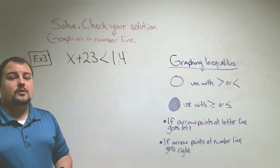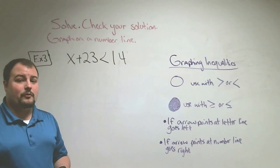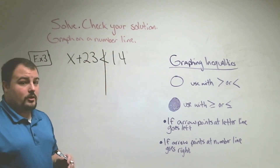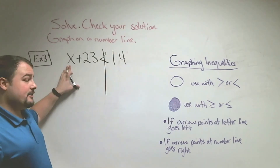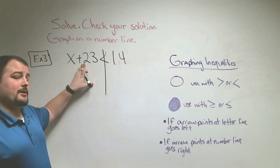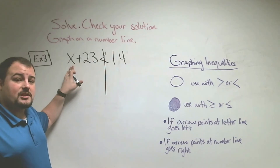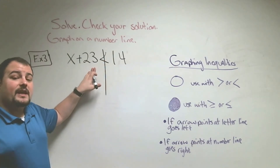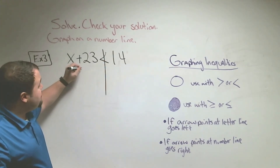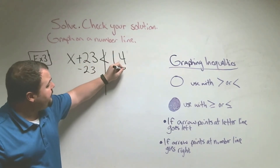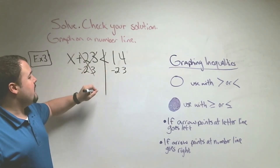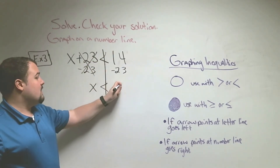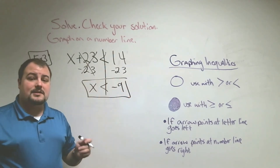In Example 3, we're solving x plus 23 is less than 14. Our job is to get the variable x by itself. Draw a line through the inequality sign separating left from right. We need to get rid of plus 23 — the opposite is subtract 23. This cancels out, and we get x is less than 14 minus 23, which is negative 9. Our answer is x is less than negative 9.